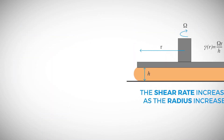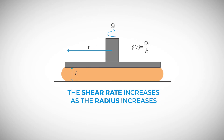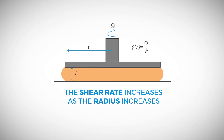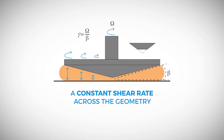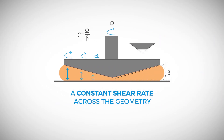One difference is the shear rate in the radial direction. For parallel plates, the shear rate increases as the radius increases. For cones, the change in slope results in a constant shear rate across the geometry. The constant shear rate makes the cone and plate useful for measuring normal stresses.